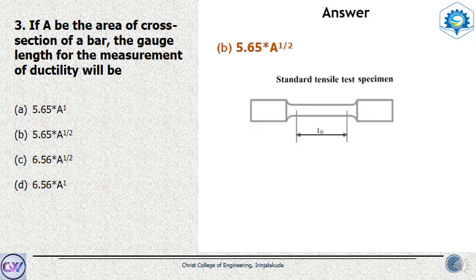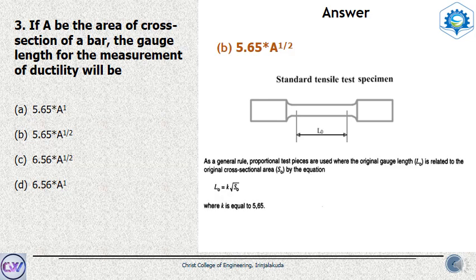Let's look at what gauge length is. If you have a standard tensile test specimen of length L and cross-section area A, we mark a special measurement length between the fixed and loaded ends — this is the gauge length L₀, given as 5.65 into root A, where A is the area of cross-section. From the IS code, the gauge length is given as L₀ = K × root(S₀), where K is a constant equal to 5.65. That matches our answer.